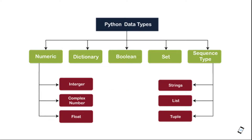So what are the data types? The data types are organized in a hierarchy. First, look at the hierarchy: numeric value, dictionary, boolean, set, and sequence type. In this video, we will see numeric and sequence string. The advanced concepts — dictionary, set, and list — will be covered in a new video.